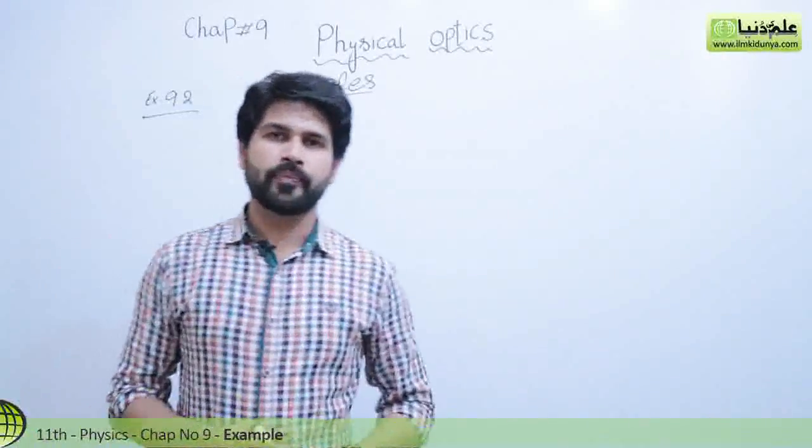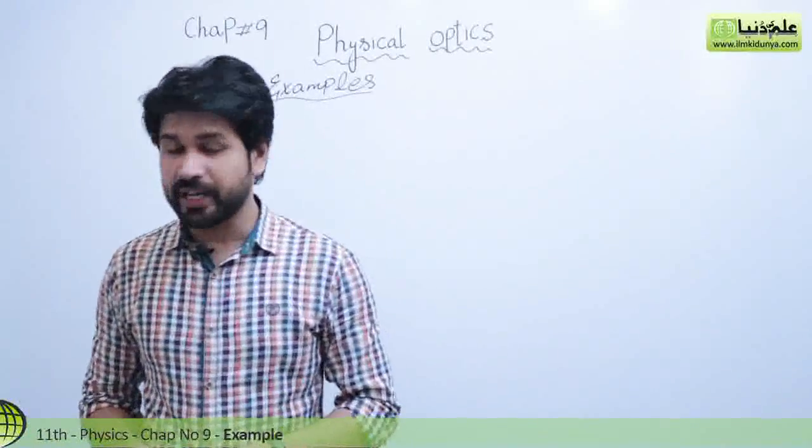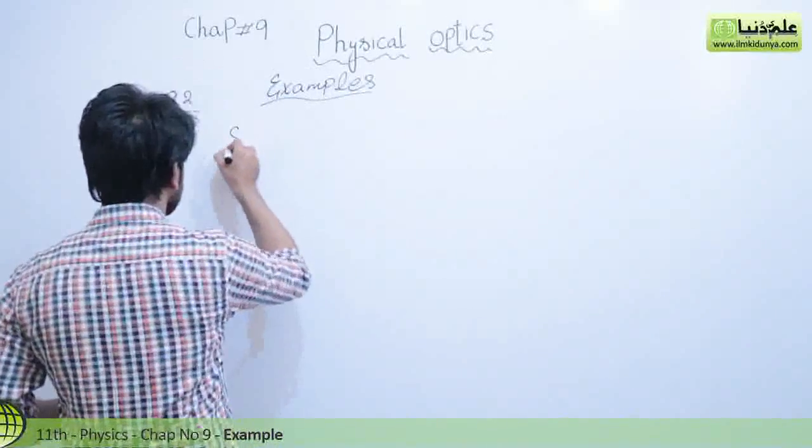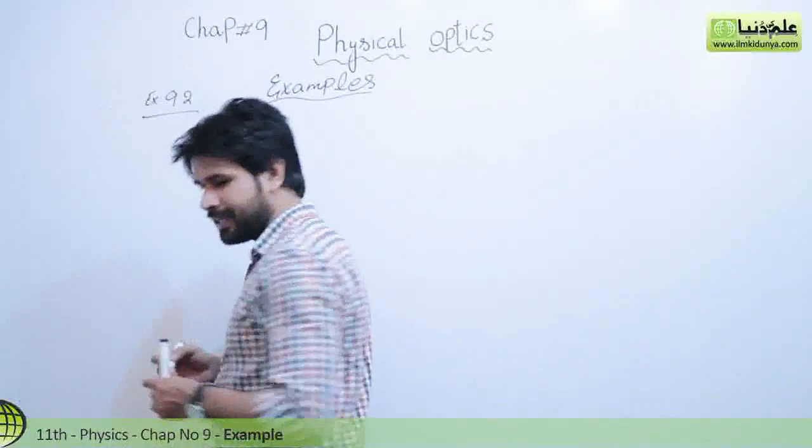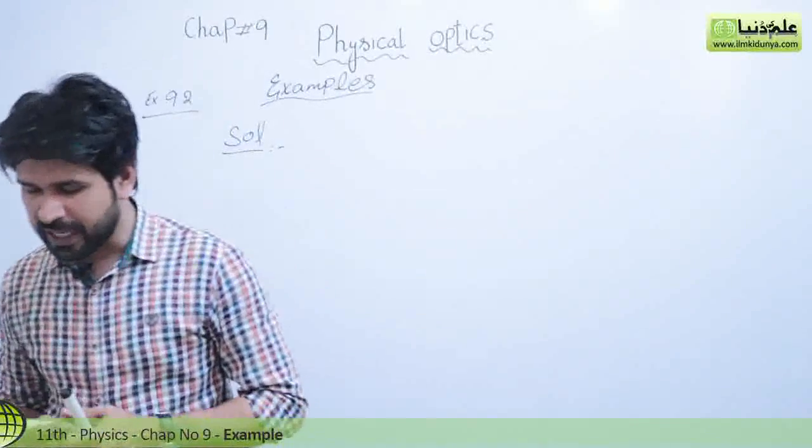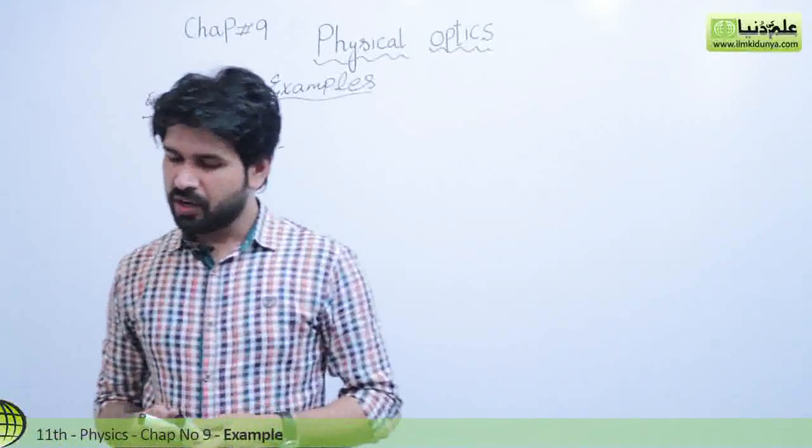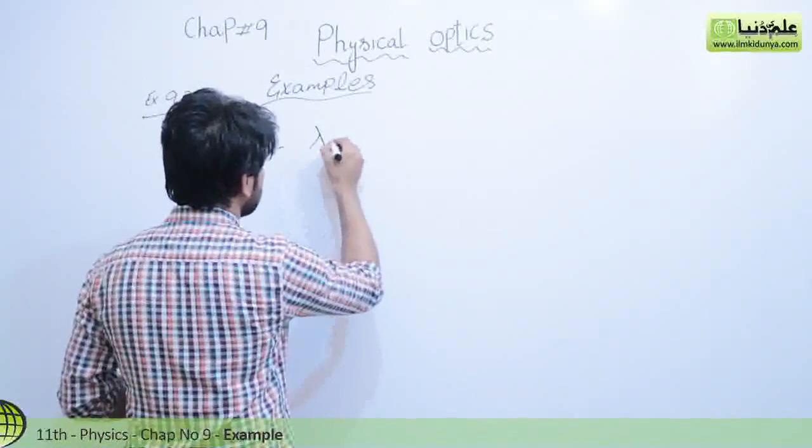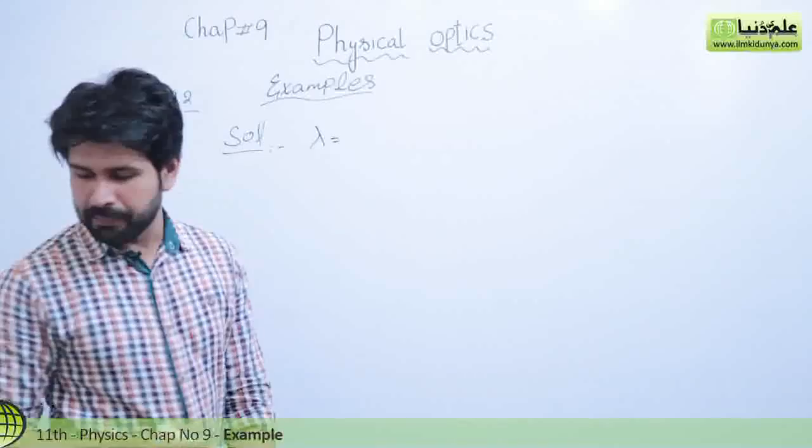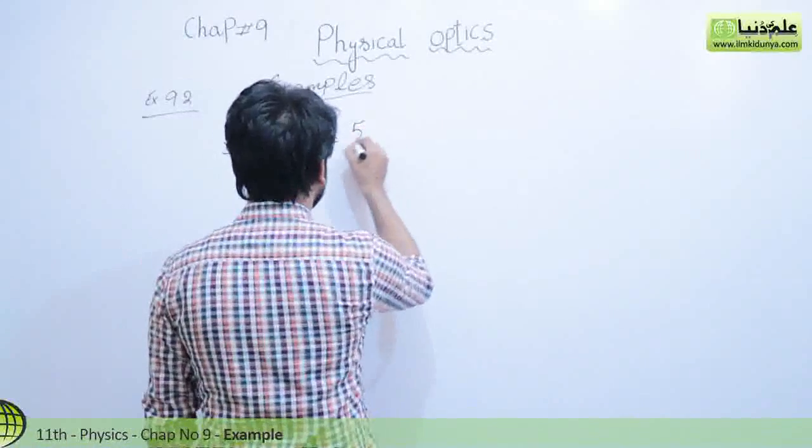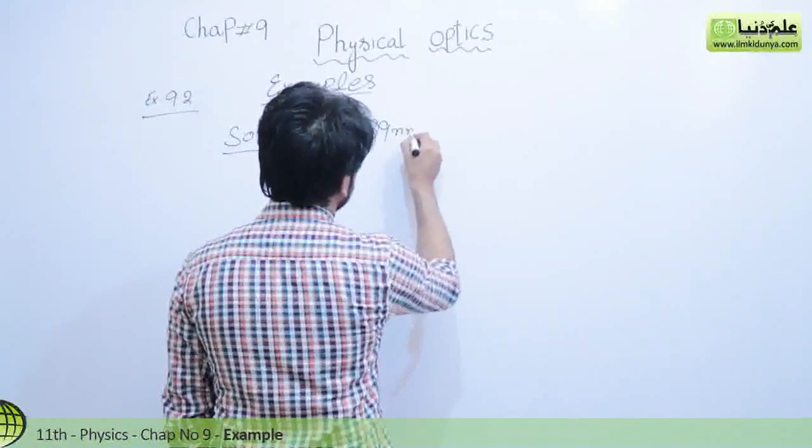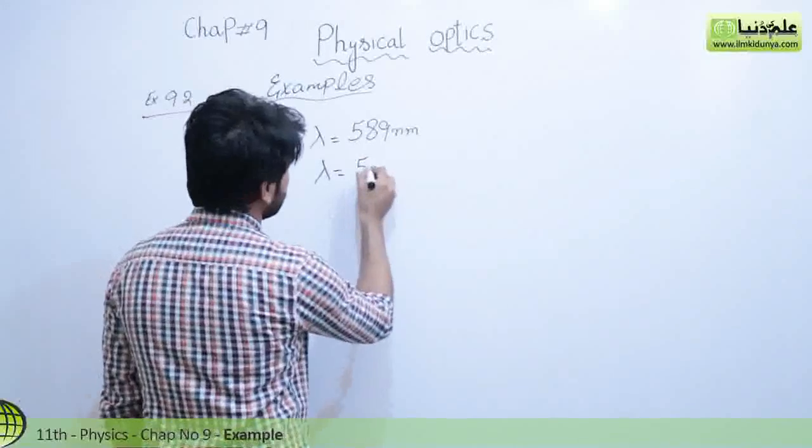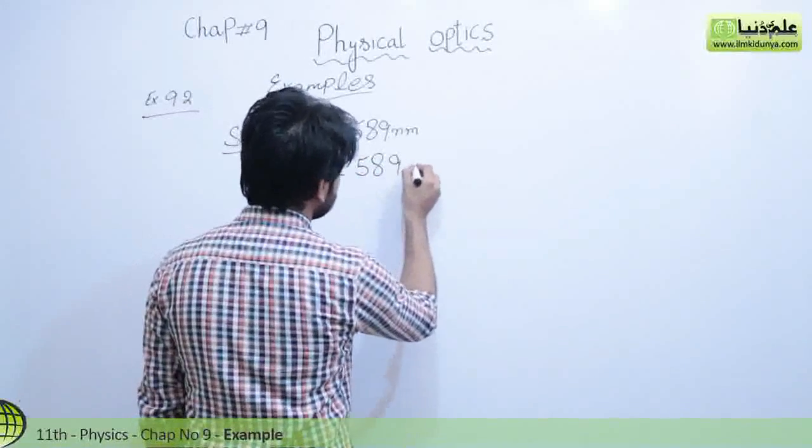Okay students, to solve this numerical problem we are going to write the given data in solution. First we have given the wavelength of yellow sodium light which is lambda. So you can write the wavelength as lambda equals 589 nanometer, and you know very well 1 nanometer equals 10 raised to the power minus 9 meter.